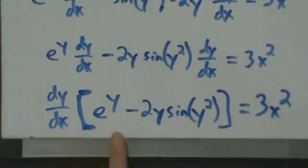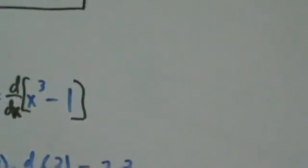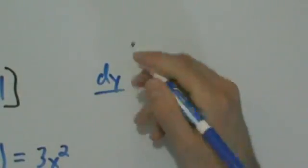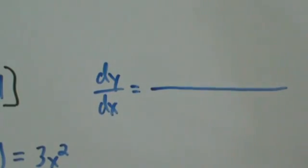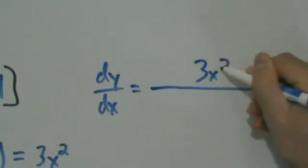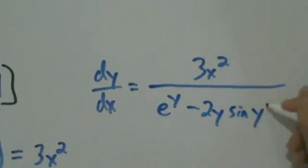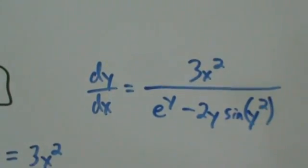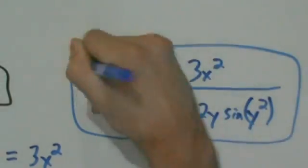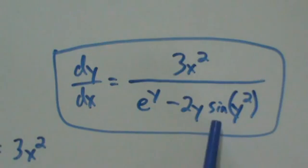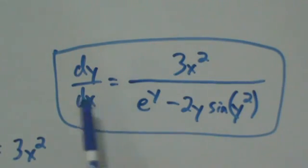To find dy/dx, we just divide both sides by the quantity in brackets, giving us dy/dx equals 3x squared divided by e to the y minus 2y sine of y squared. And that's our answer. We have both x's and y's in the answer, as expected with implicit differentiation — y is implicitly a function of x, so we can't write y explicitly in terms of x, meaning our derivative should contain y's as well.